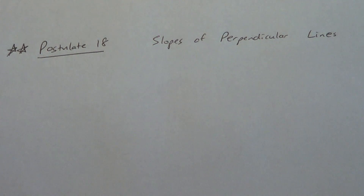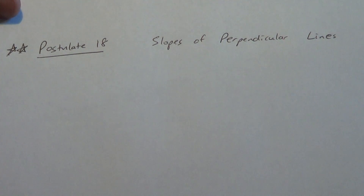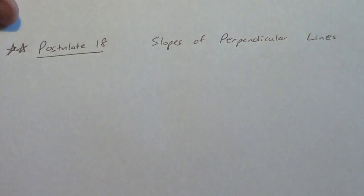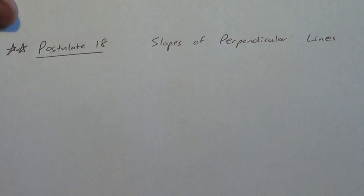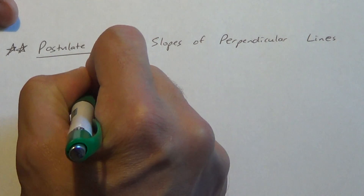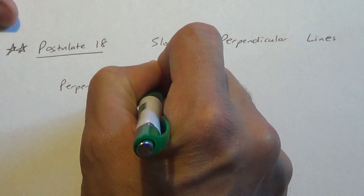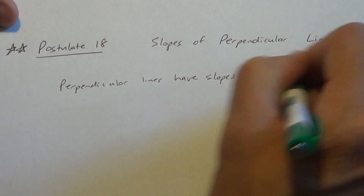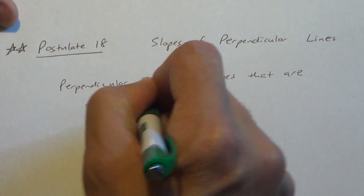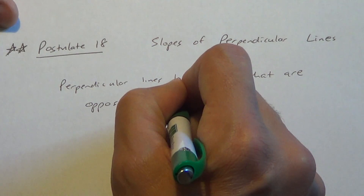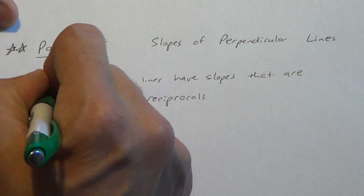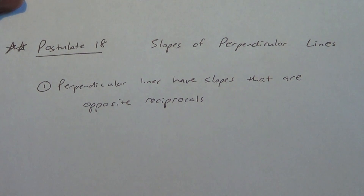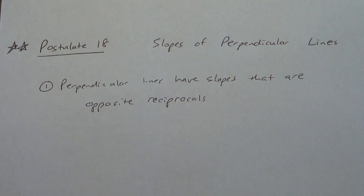Now Postulate 18 — slopes of perpendicular lines. In a coordinate plane, perpendicular lines have slopes that are opposite reciprocals. The book states it as: the product of the two slopes equals negative one. Both mean the same thing. For example, if one slope is 2/3, the opposite reciprocal would be negative 3/2.